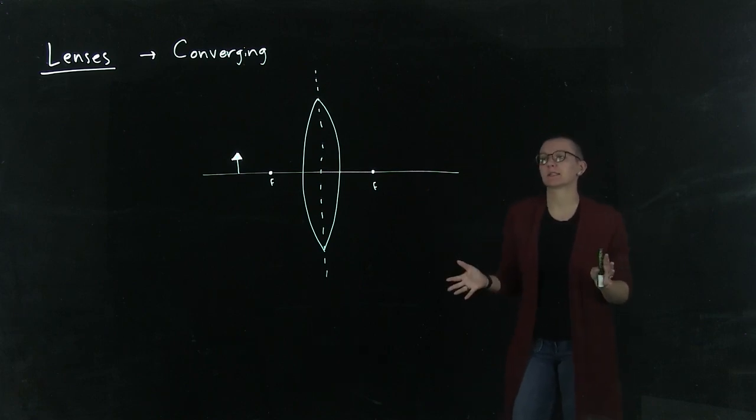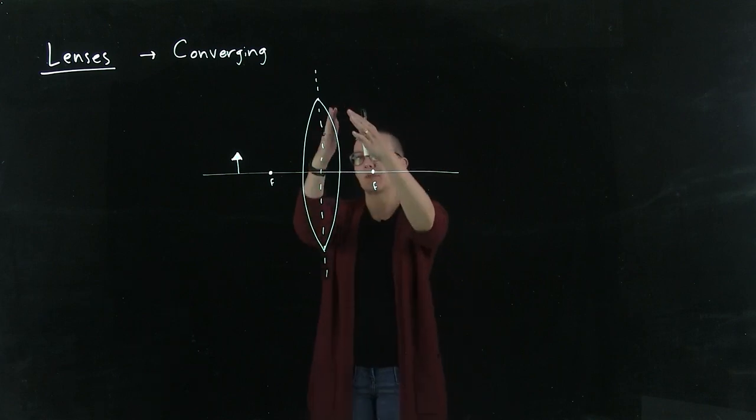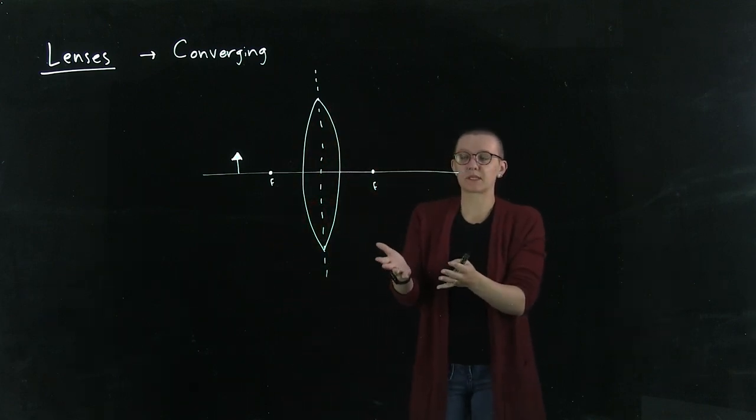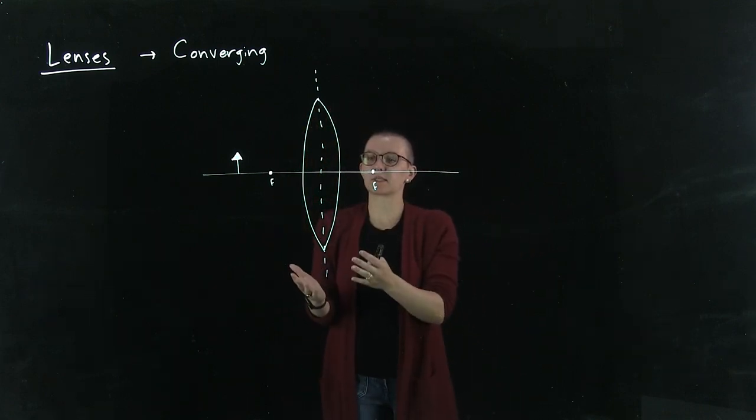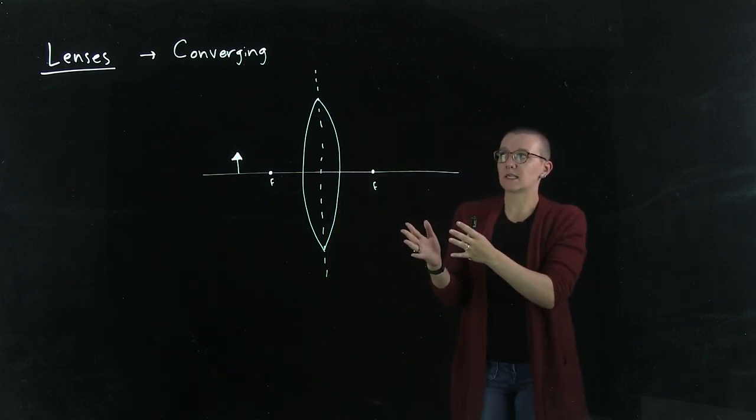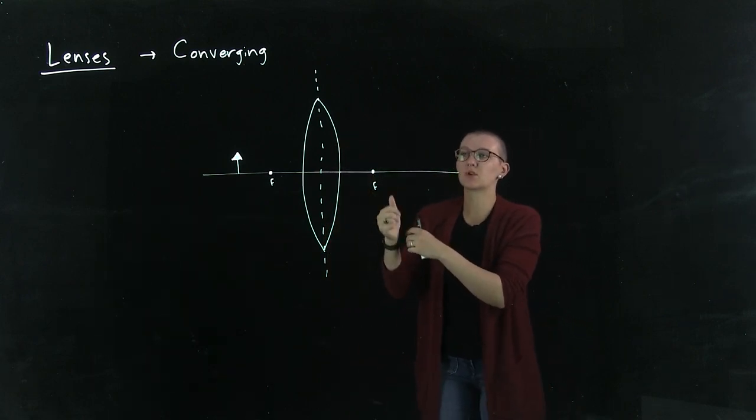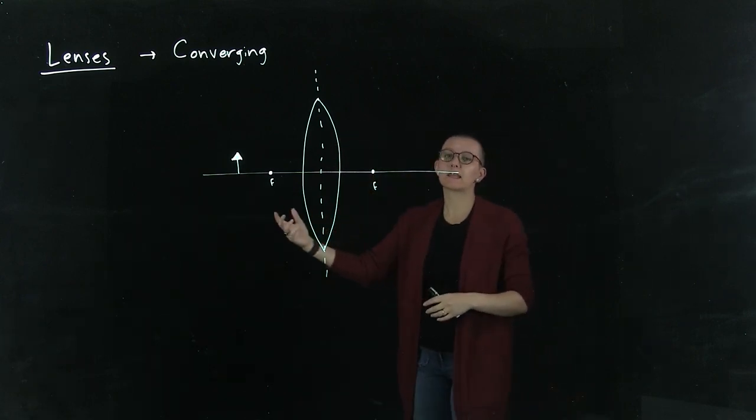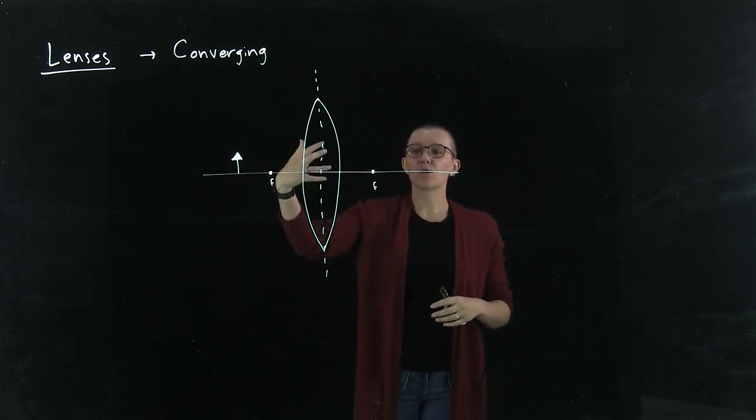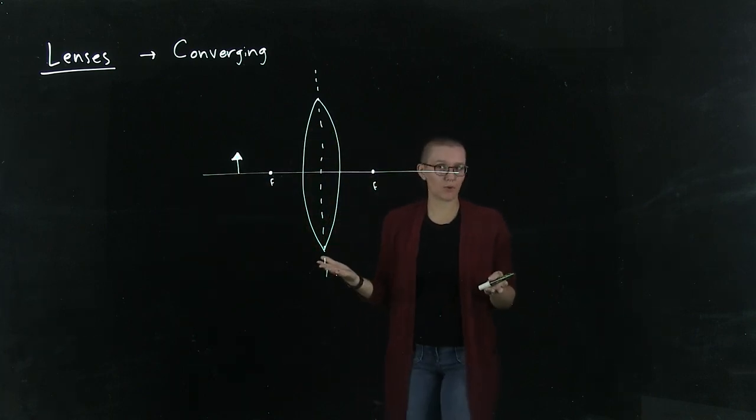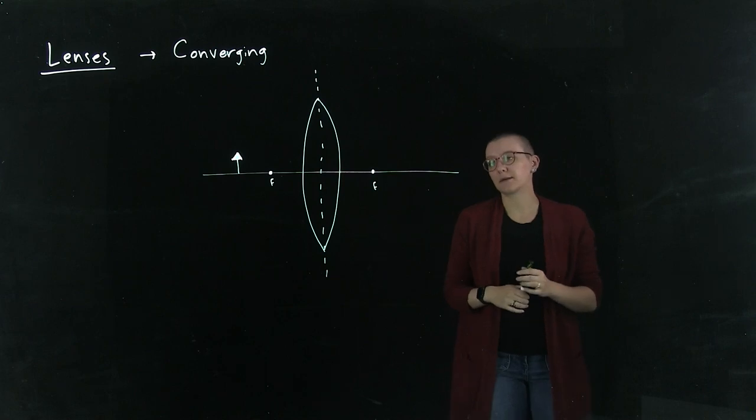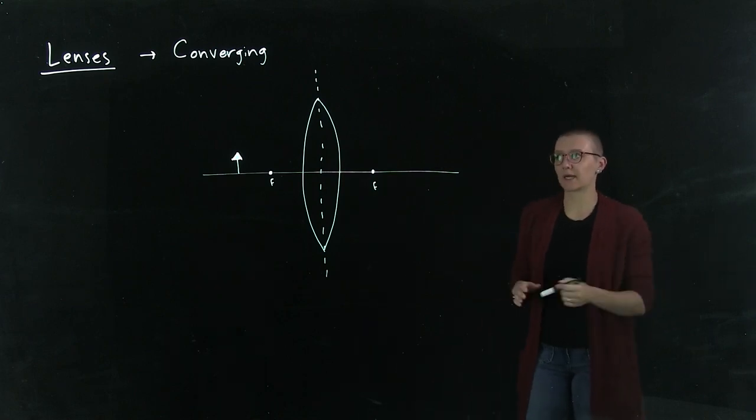When we say converging lenses, we mean this shape of lens where you have two curved surfaces. The purpose of this lens is to do exactly what it says, which is to converge light. Any light entering the lens will converge to a single point somewhere on the other side.